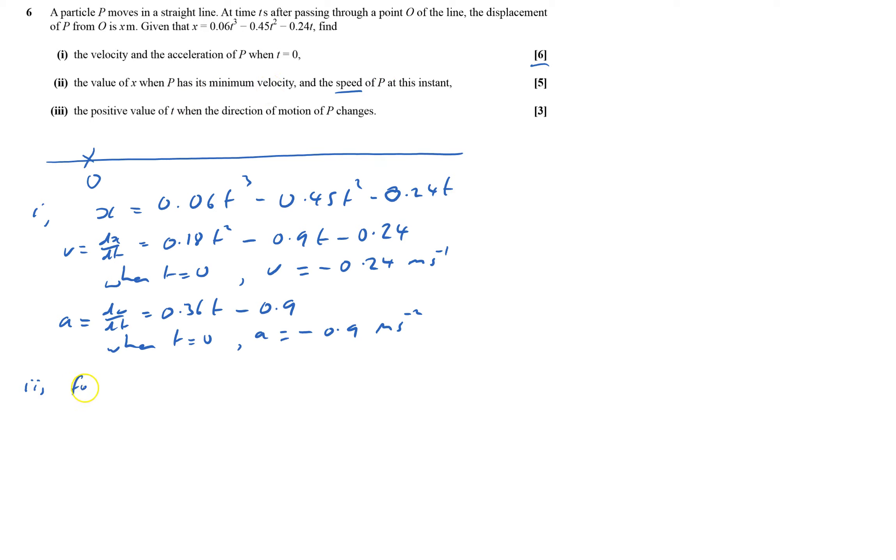So for minimum velocity, dv by dt will equal 0. We just work that out here. So 0.36t minus 0.9 equals 0. So that says that 0.36t equals 0.9, therefore t equals 2.5.